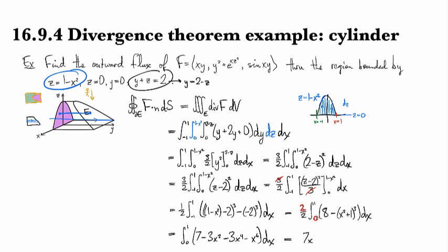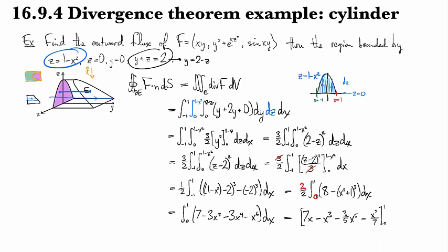Integrating from 0 to 1 gives 7x minus x cubed minus 3 over 5 times x to the 5th minus 1 over 7 times x to the 7th, evaluated from 0 to 1. We end up with 7 minus 1 minus 3/5 minus 1/7, giving a denominator of 35, and bringing it all together there are 184 of them — so the answer is 184/35.